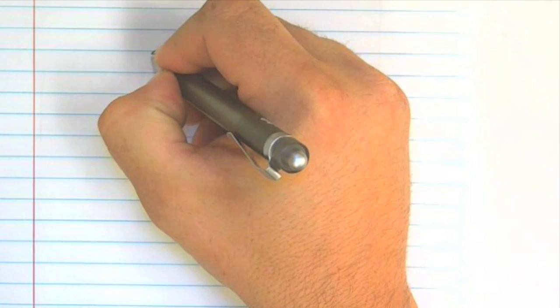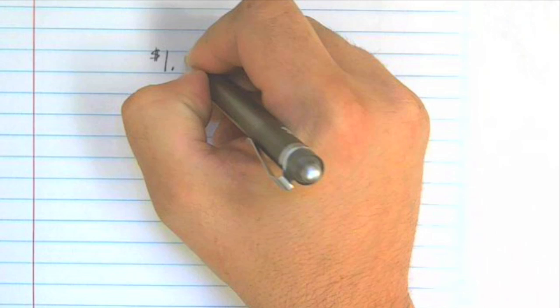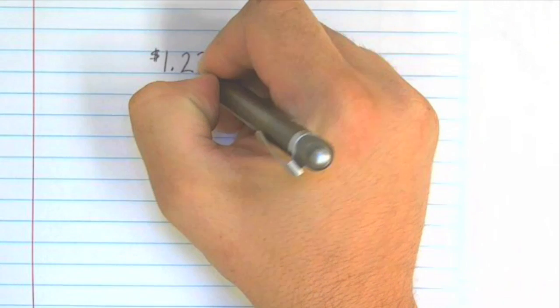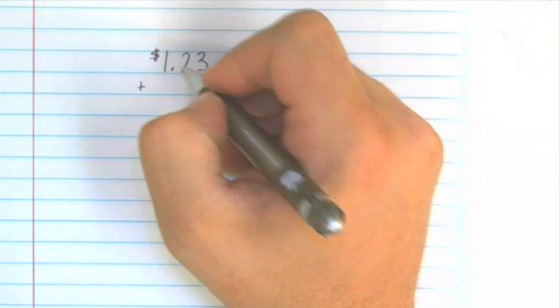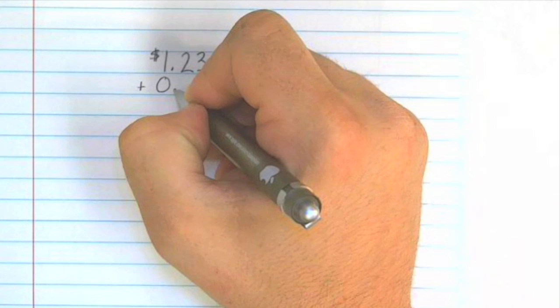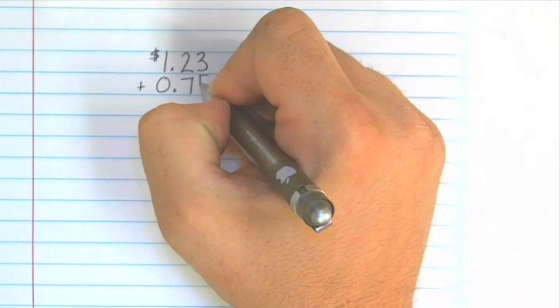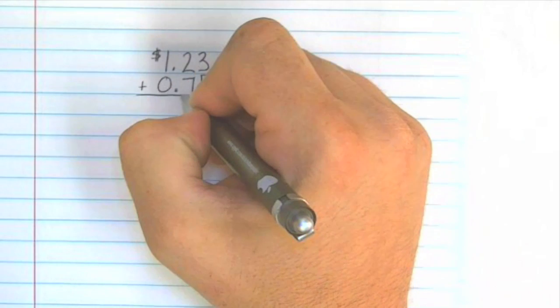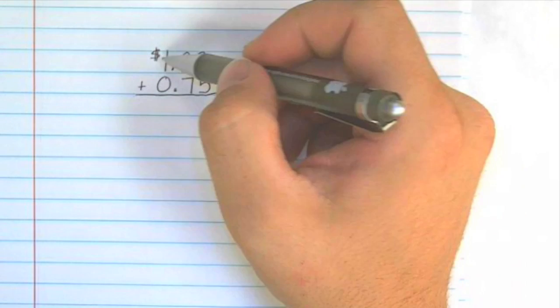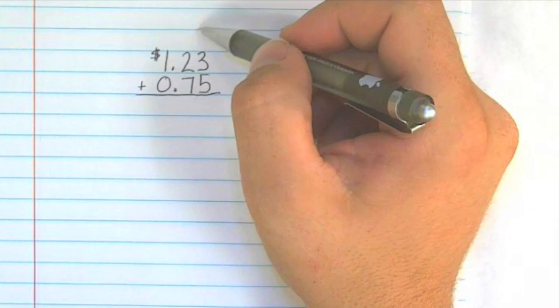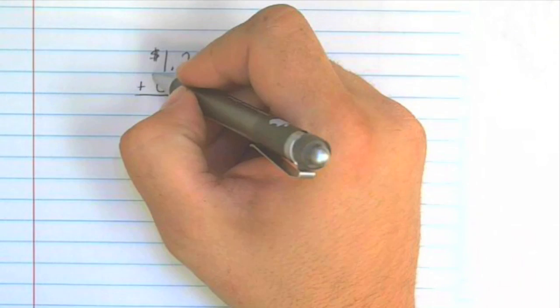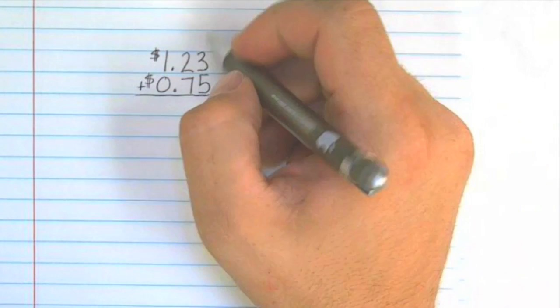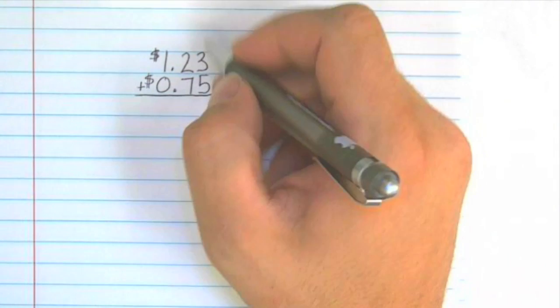Let's try another money problem. Let's pretend we have $1.23 and that we find another 75 cents. Again, written neatly, numbers, decimal points, and dollar signs lined up vertically.